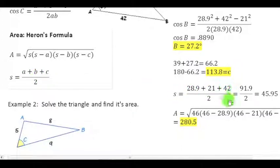Alright, so the formula, plug in 46 since that was my half a perimeter. 46 minus a, 46 minus b, 46 minus c. Take the square root of that value and I get 280.5 units squared.